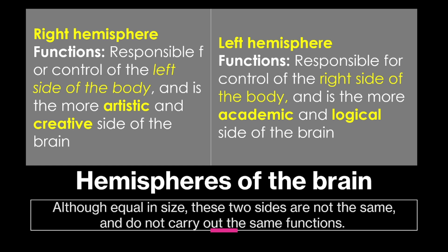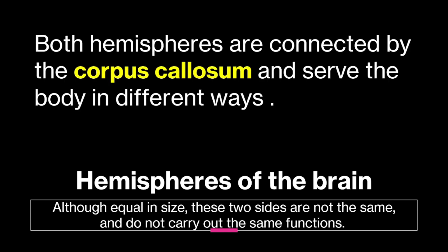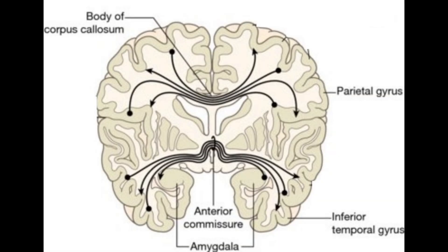Remember that although equal in size, these two sides are not the same and do not carry out the same functions. Both hemispheres of the brain communicate with each other through a structure called the corpus callosum. This is a bundle of nerves that acts like a bridge between the two hemispheres, allowing the left and right sides to coordinate and work together. Although the two hemispheres specialize in different functions, the corpus callosum allows for seamless communication, enabling complex tasks that require both logical and creative thinking.